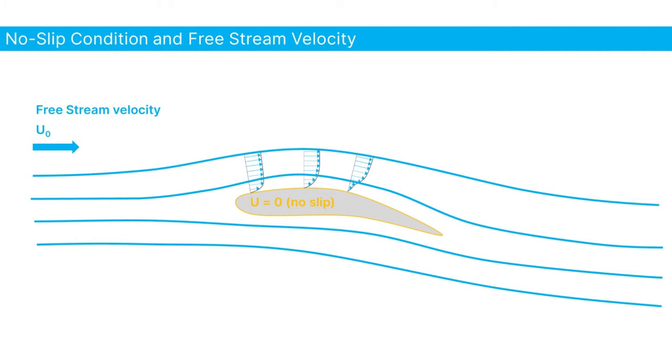Let's start with the no-slip condition. This one states that no matter how smooth the surface of an object is, the air will always stick to it, meaning that the velocity on the surface is always zero.